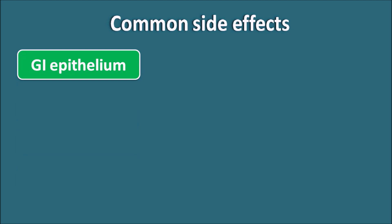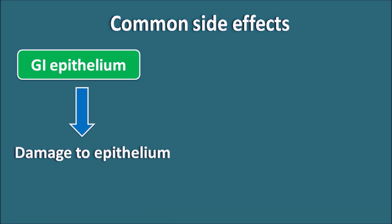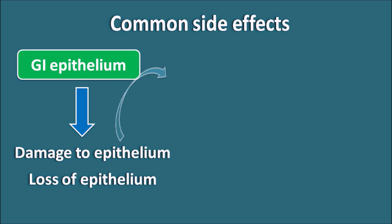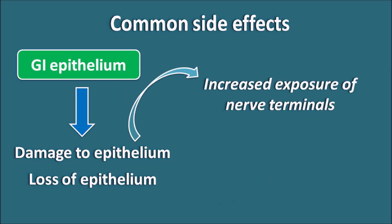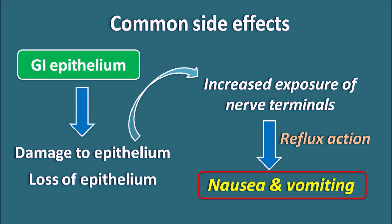Another area of continuous cell division is the GI epithelium, where old epithelium is continuously replaced by new epithelial cells. Anti-cancer agents can affect the GI epithelium, producing damage and loss of epithelium. This increases the exposure of nerve terminals present at the GI epithelial cells, and even a mild stimulus can produce a strong reflex action, resulting in nausea and vomiting in the patient.